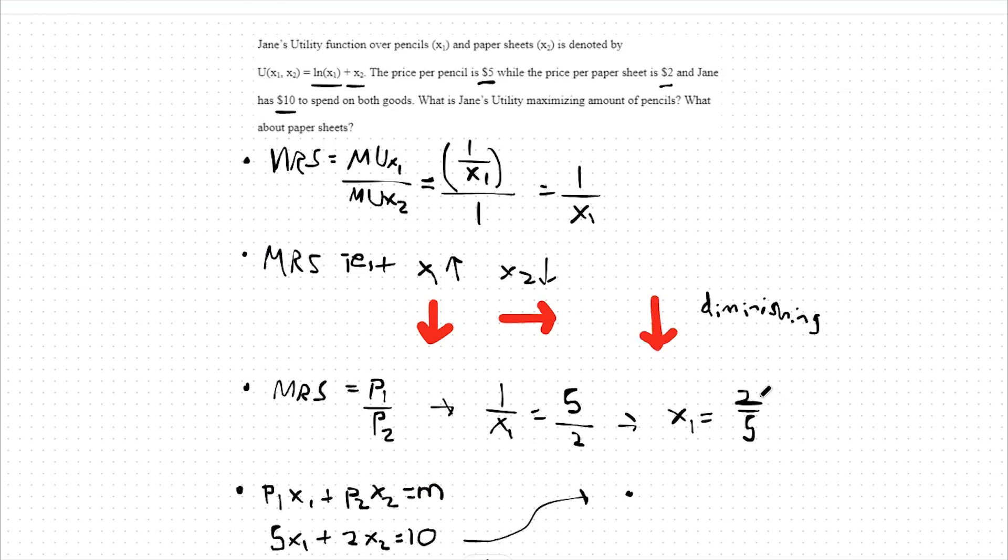From there, I can plug in 2 fifths for x1 into that function. These 5s cancel out. And we're left with 2 plus 2 x2 equals 10. Meaning 2 x2 is equal to 8, so x2 is equal to 4.